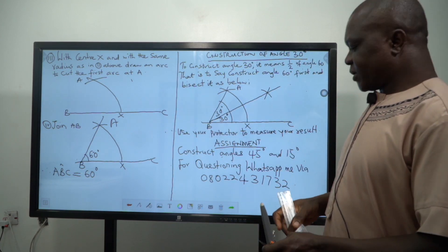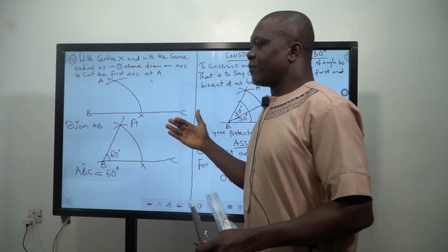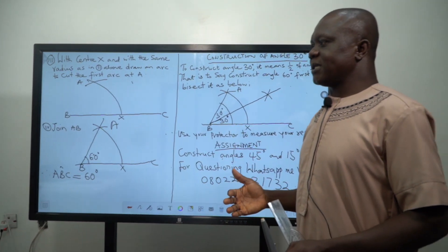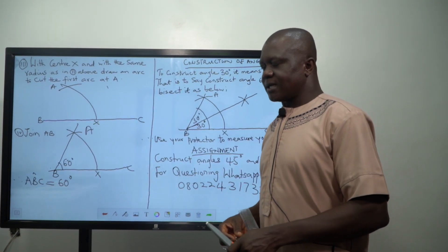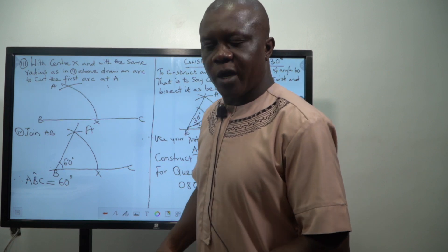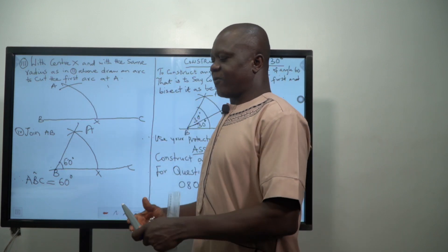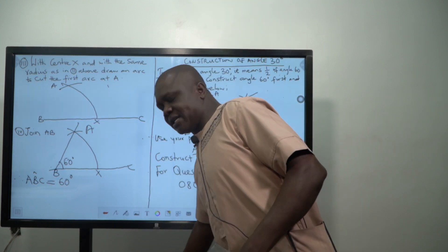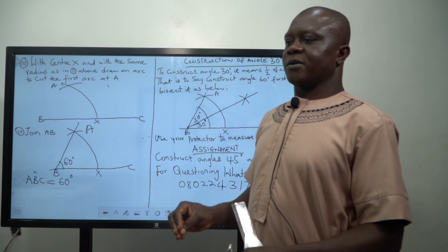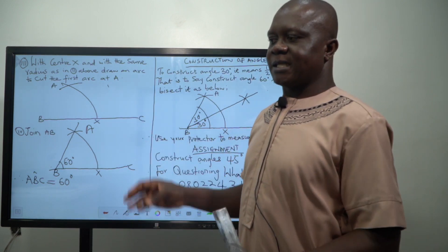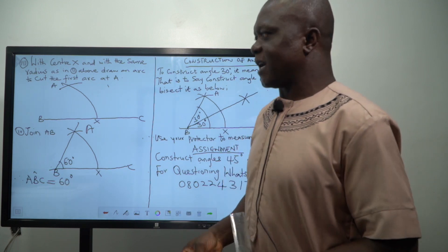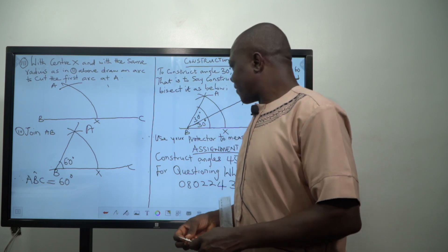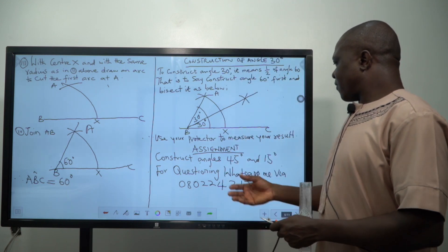So in summary, we have showed you how angle 30, angle 90, angle 45 can be constructed. That there is no way one can construct angle 45 or angle 30 without constructing angle 90 and 60 first, because 45 is a half of 90 whereas 30 is a half of 60.